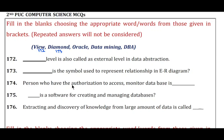Question 174: The person who has the authorization to access and monitor the database is — the answer is DBA, which means Database Administrator. Question 175: Dash is a software for creating and managing databases — the answer is Oracle. Question 176: Extracting and discovery of knowledge from a large amount of data is called — the answer is data mining.